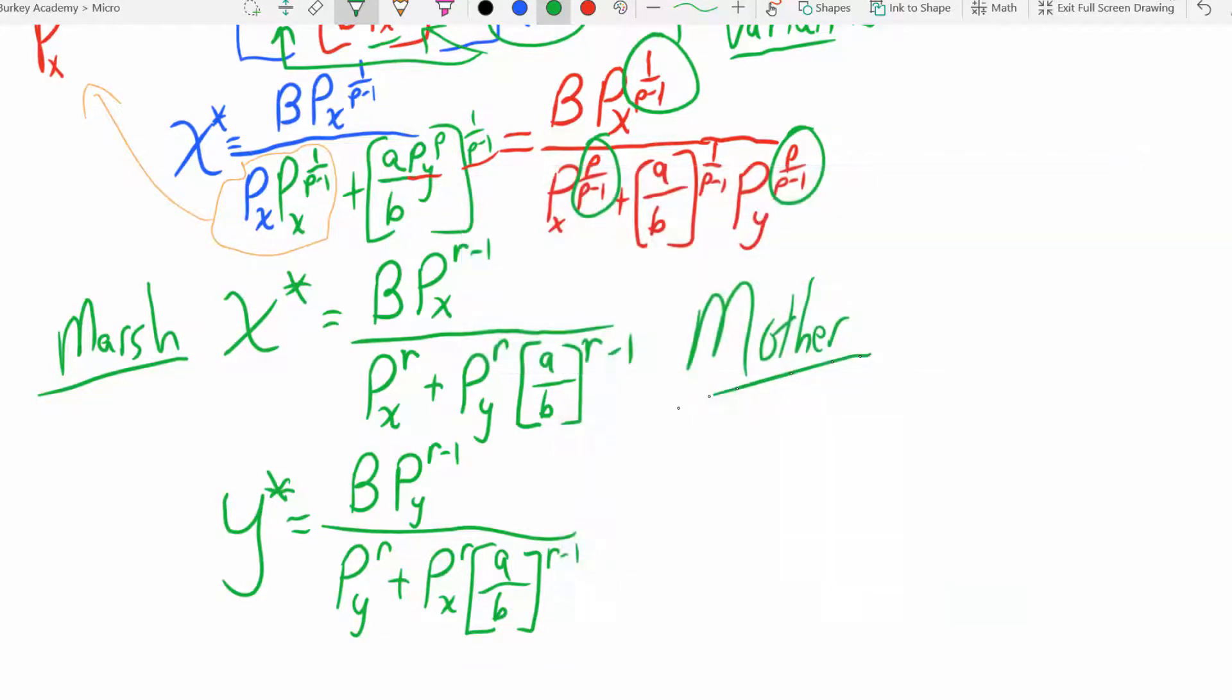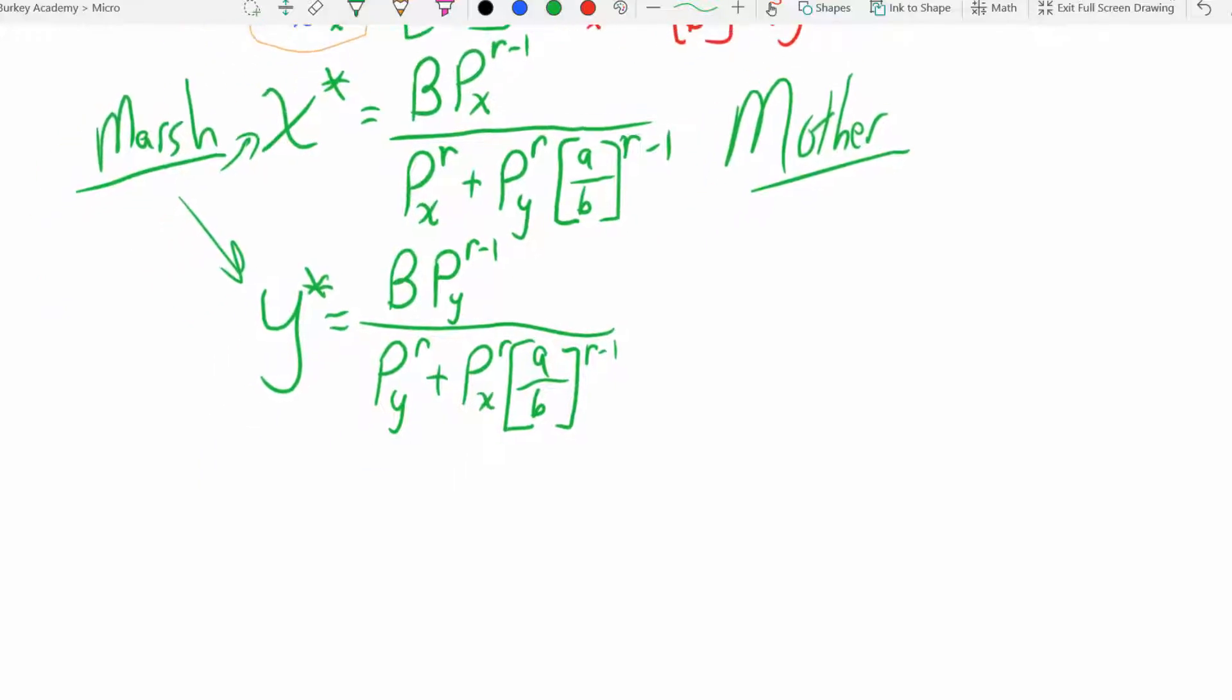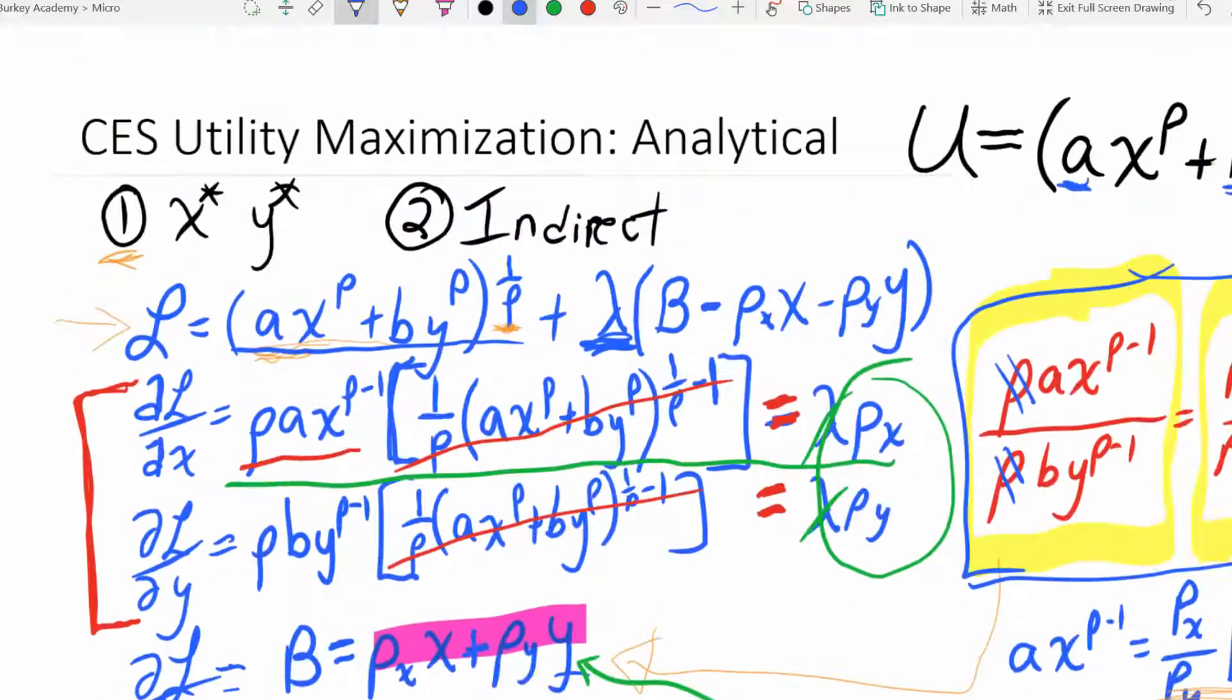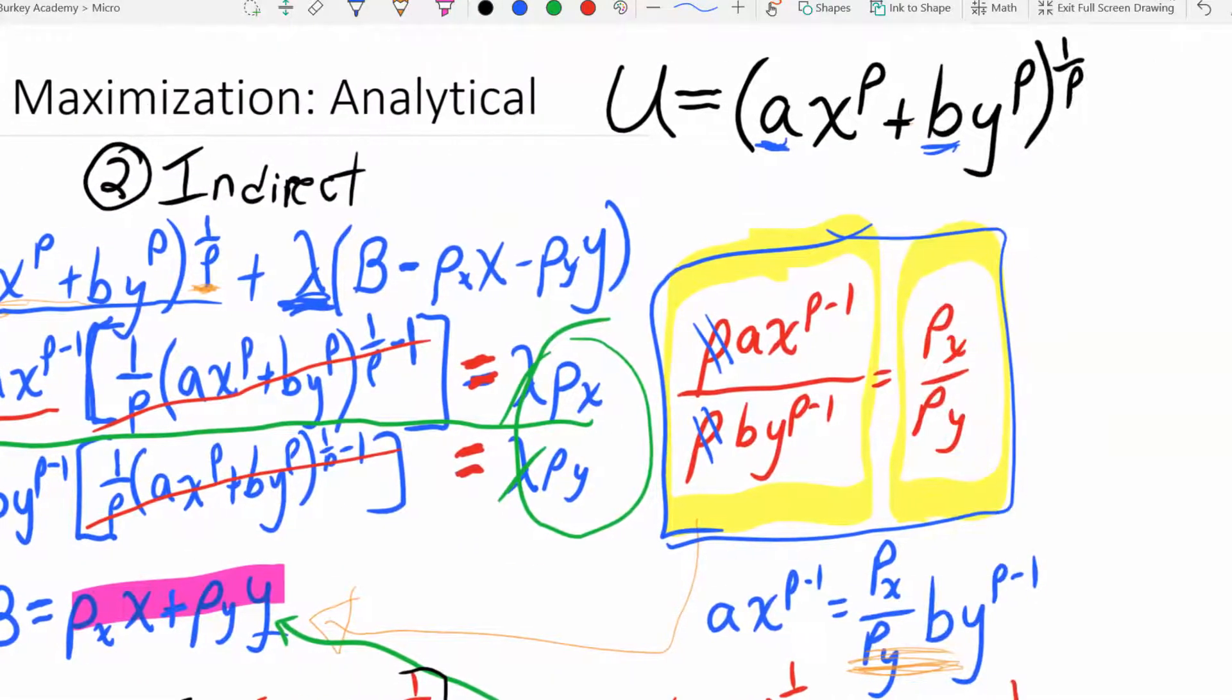Download the Mother of All Consumer Theory handouts. In order to get an indirect utility function after you have the Marshallians, just plug these back into the utility function. So the kind of gross version of that, it's going to look like this: U equals, remember what our original utility function way up here looks like, a times x to the ρ plus b times y to the ρ to the one over ρ.